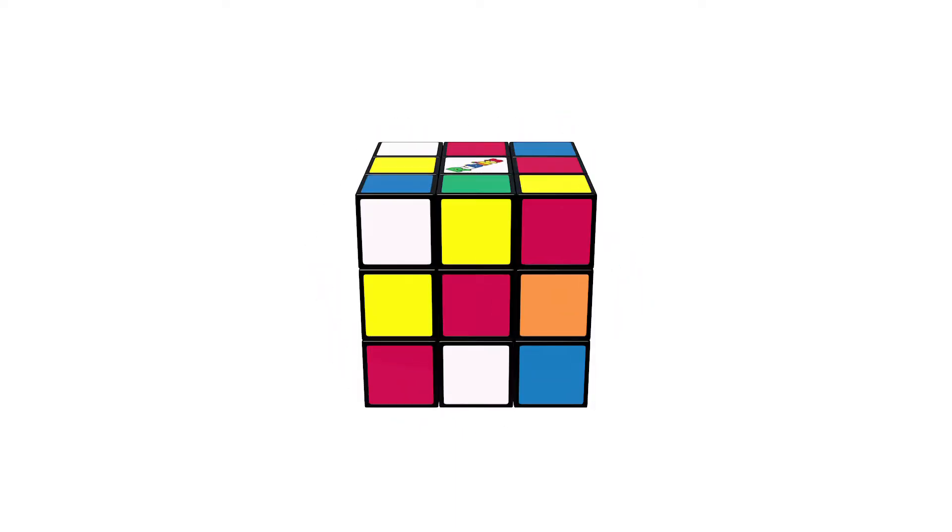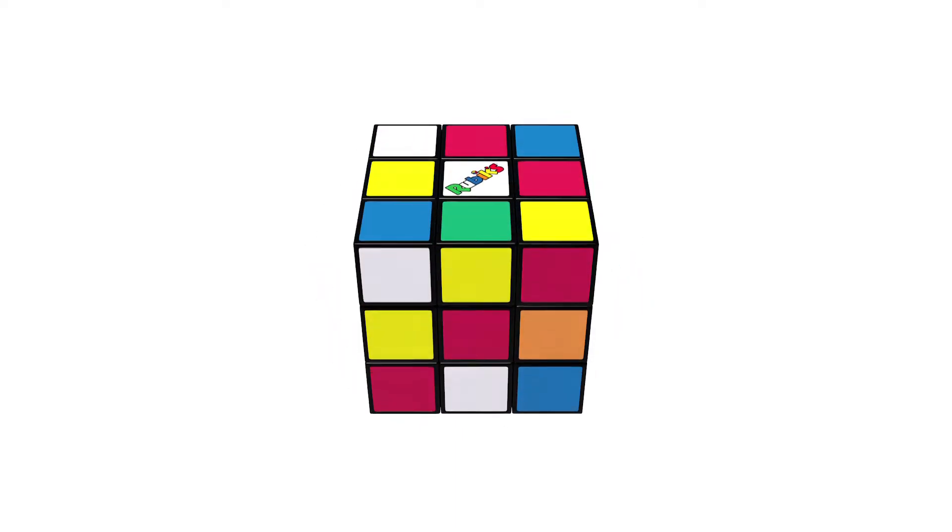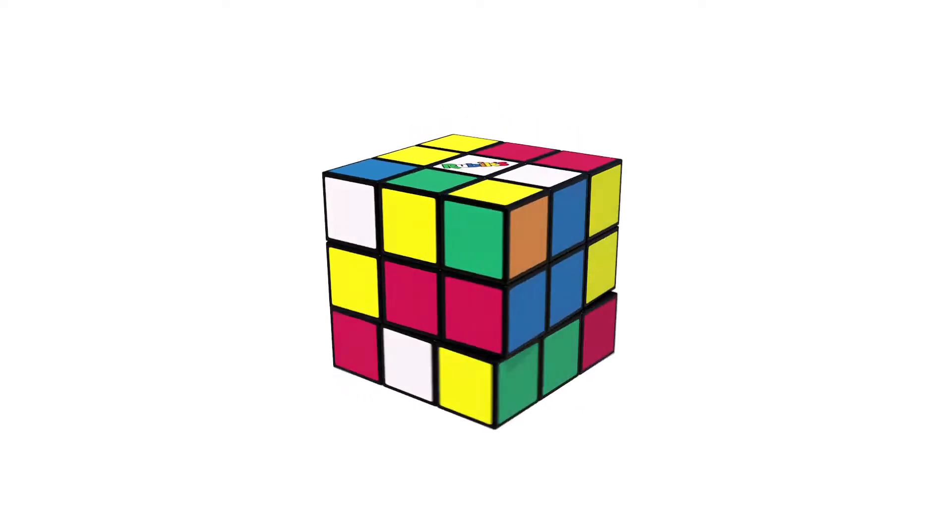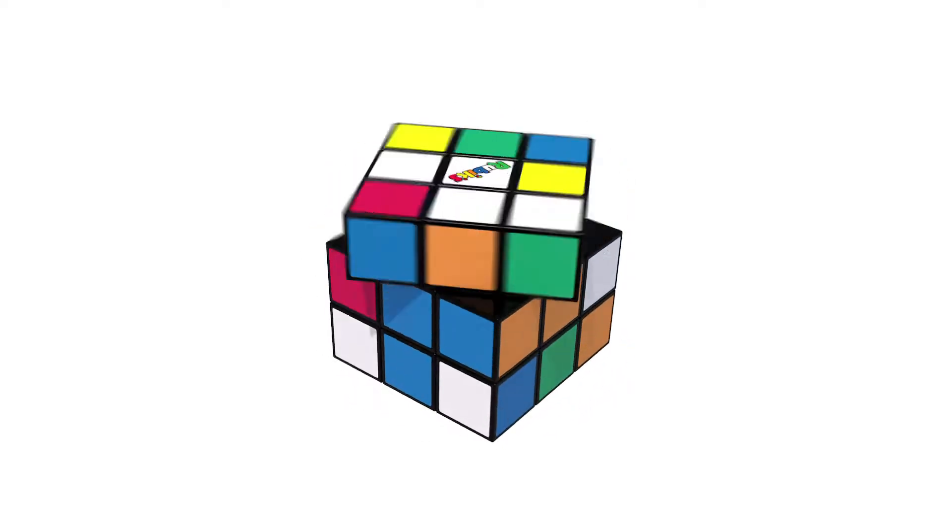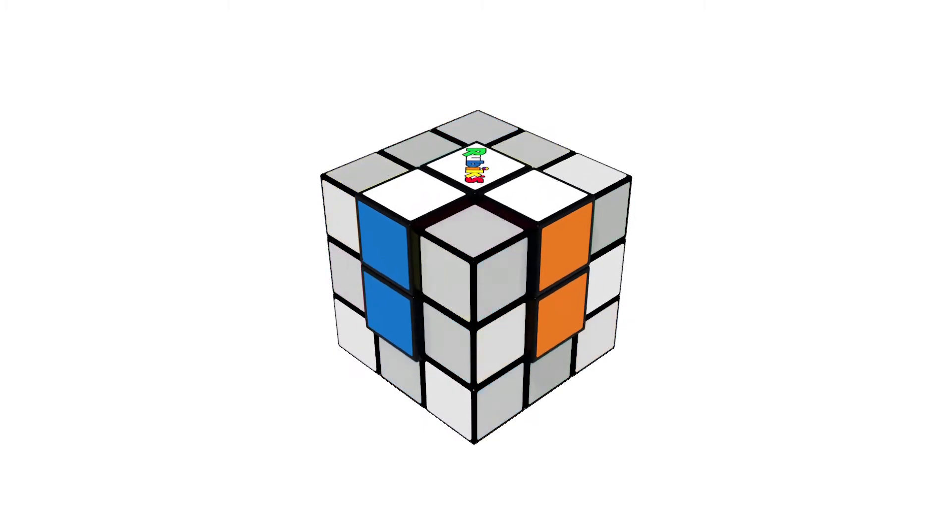Tip 1. Hold the cube with the white centerpiece on top. As the cross forms, you'll notice the two pieces on the side come together, the center square and the one above.